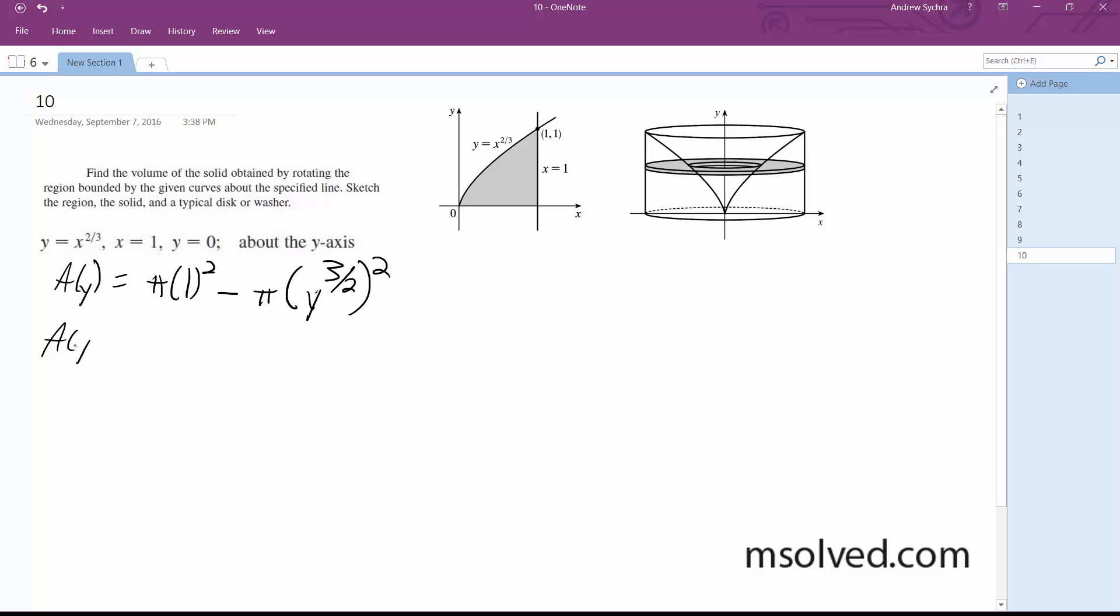So what we end up here with is A(y) equals pi times 1 squared, which is pi, minus pi y to the third. Finally, just simplifying this: pi times 1 minus y cubed to simplify it.